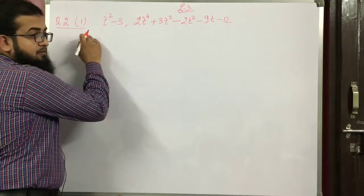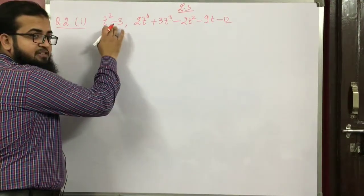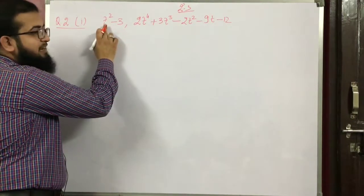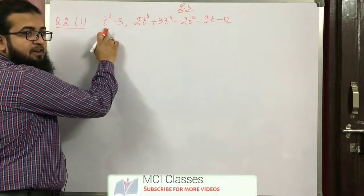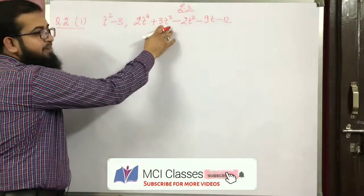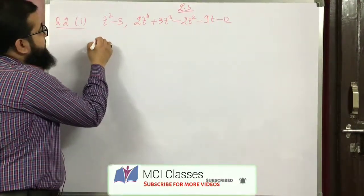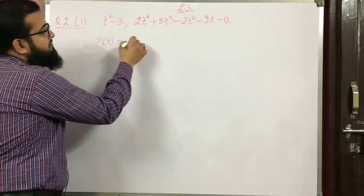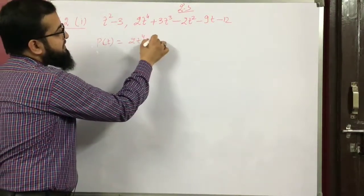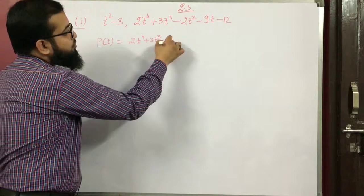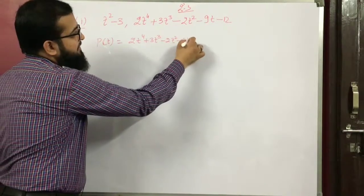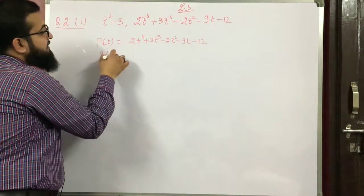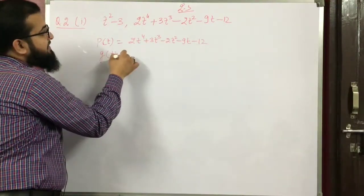First problem: g(x) is given. p(t) is a polynomial of variable t, equal to 2t raised to power 4 plus 3t raised to power 3, minus 2t squared minus 9t minus 12. The divisor g(t) is t squared minus 3.